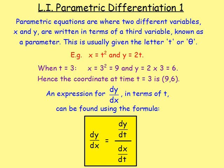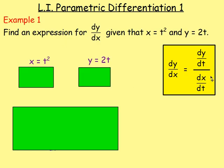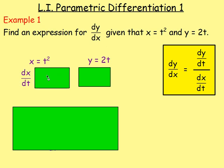Let's try some examples. Example 1: find an expression for dy/dx given that x equals t squared and y equals 2t. We're given x and y, both in terms of t, so we need to find the derivatives. We need to differentiate x and y both with respect to t. Because we're differentiating x with respect to t, we'd have dx/dt.